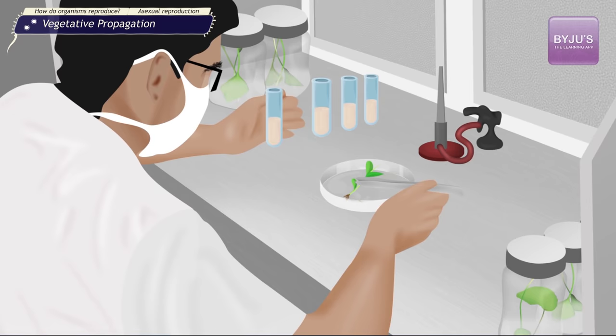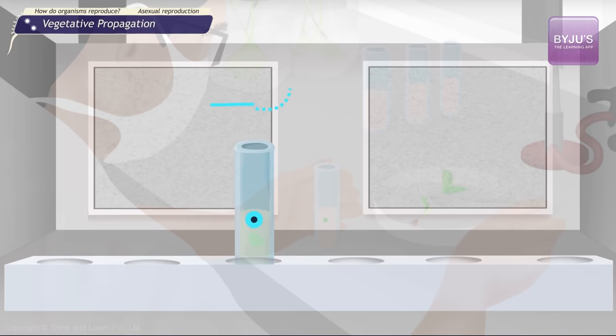In this technique, a small piece of tissue is cut from the desired plant and is transferred into a container with nutrient medium under sterile conditions.